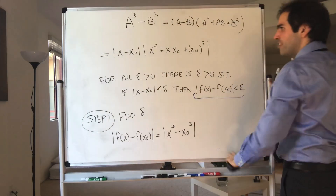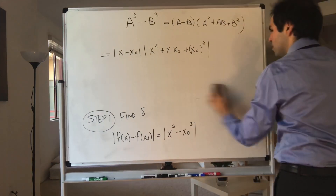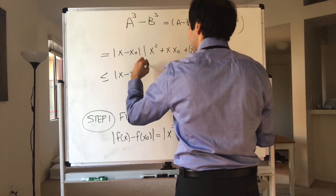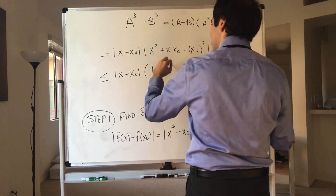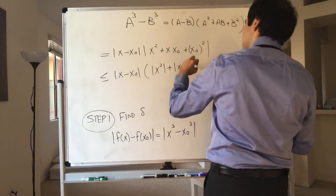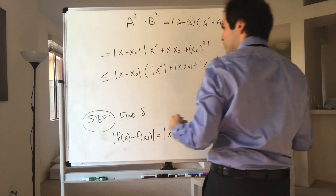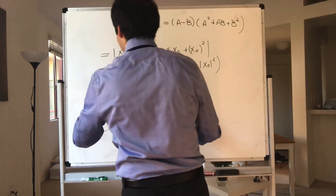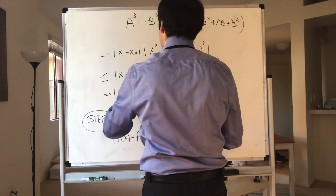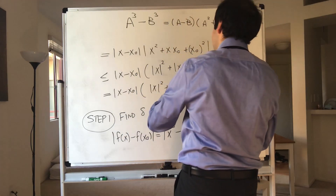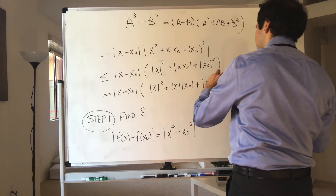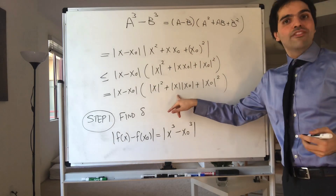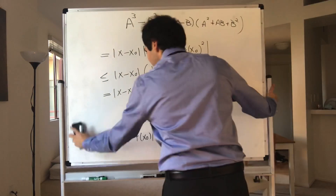And we want this to be less than the absolute value of x minus x naught times — taking absolute values of each term — absolute value of x squared, plus absolute value of x·x naught, plus absolute value of x naught squared. Which we can rewrite as x minus x naught times absolute value of x squared, plus absolute value of x times absolute value of x naught, plus absolute value of x naught squared. Now, x naught squared is constant, but we still need a bound that doesn't depend on x.